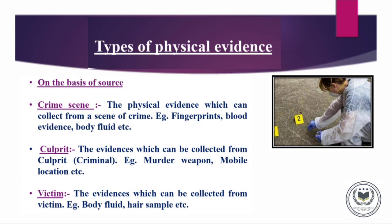Secondly, the Physical Evidences which we can collect from the Culprit can be His Mobile Location, Murder Weapons, etc. And lastly, the Physical Evidences which we can collect from the Victim can be Body Fluid, Hair Samples, etc.